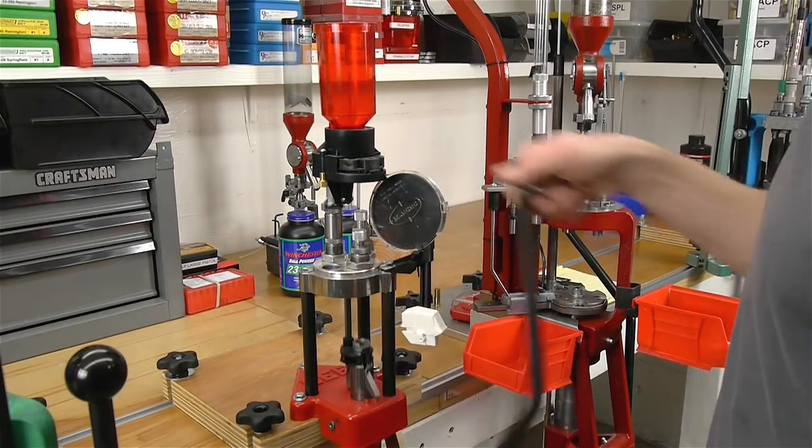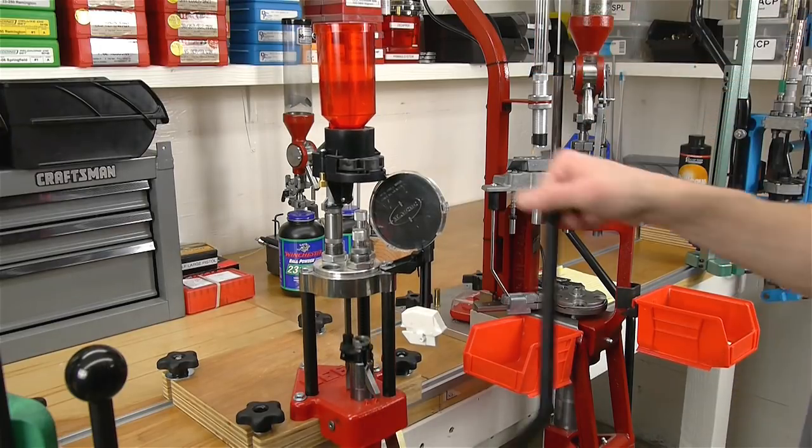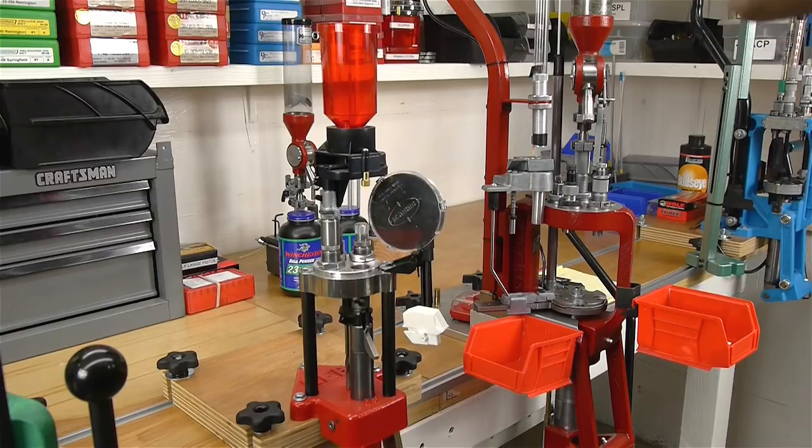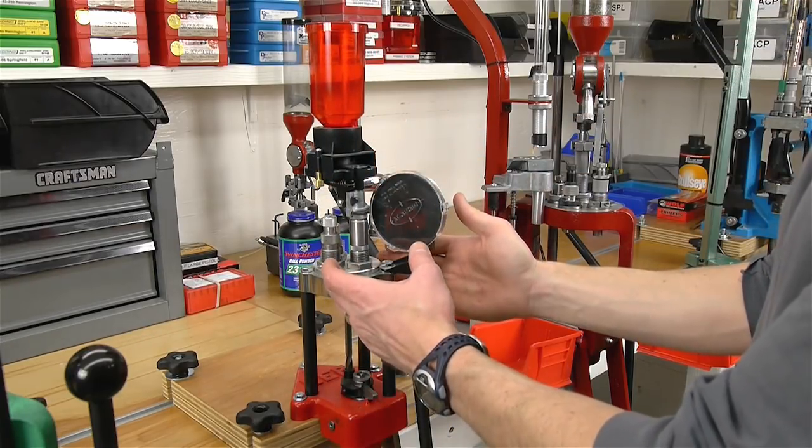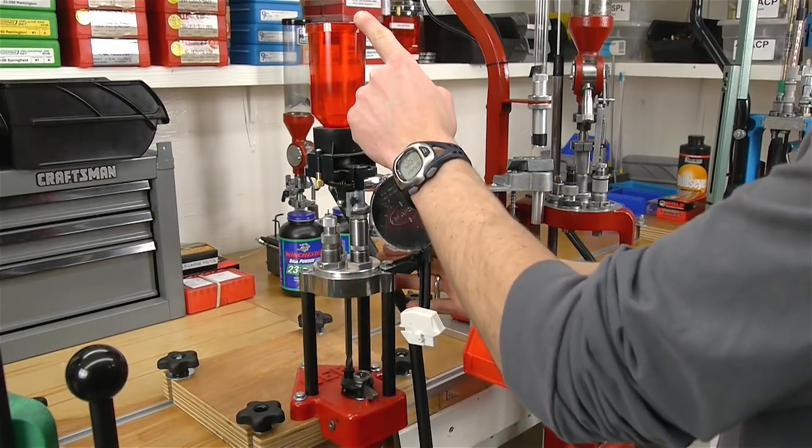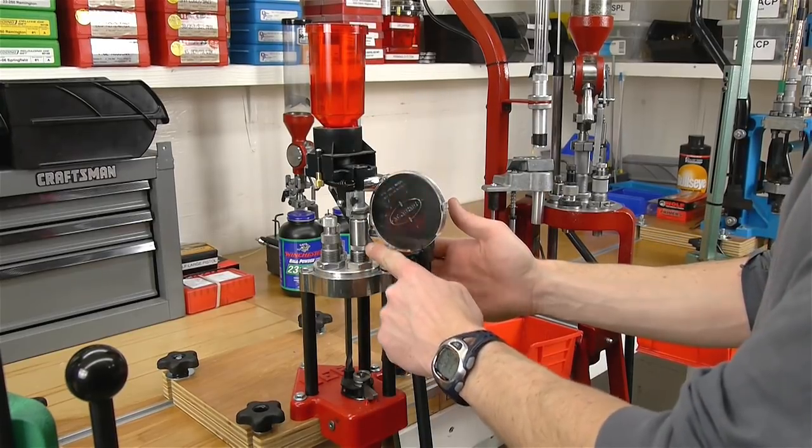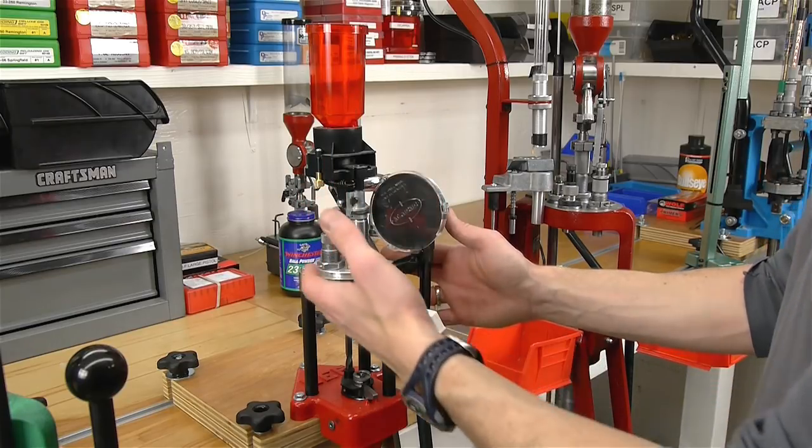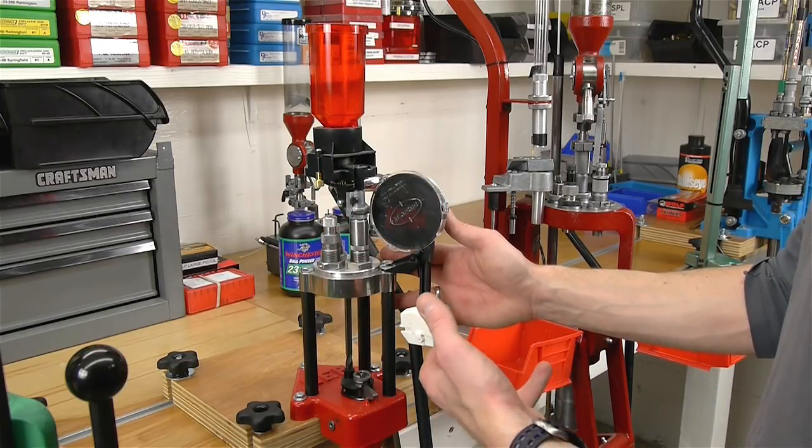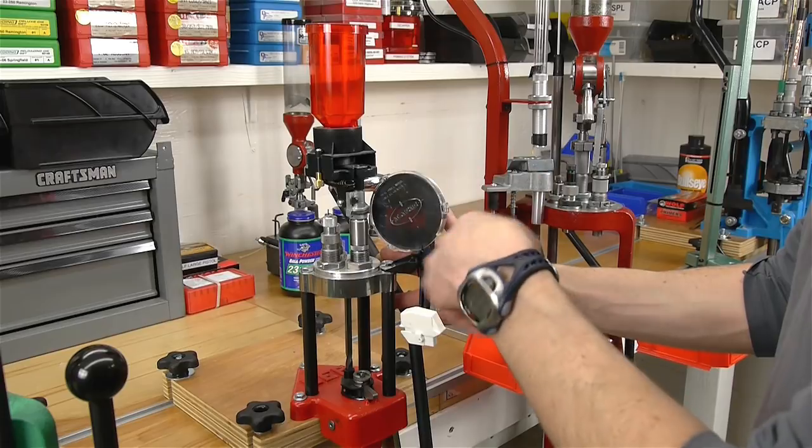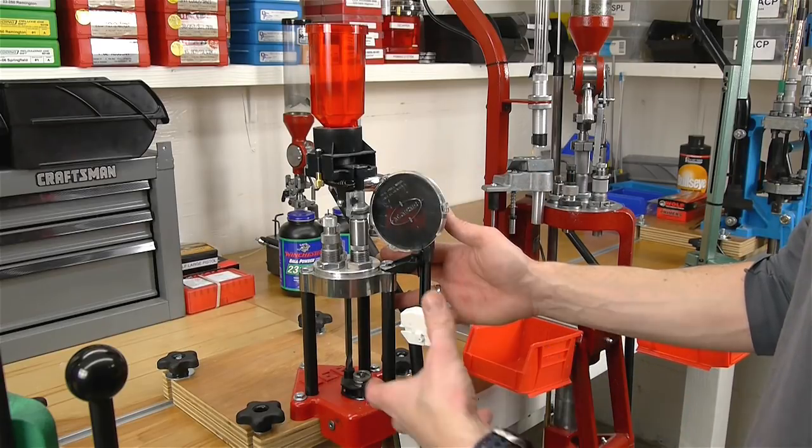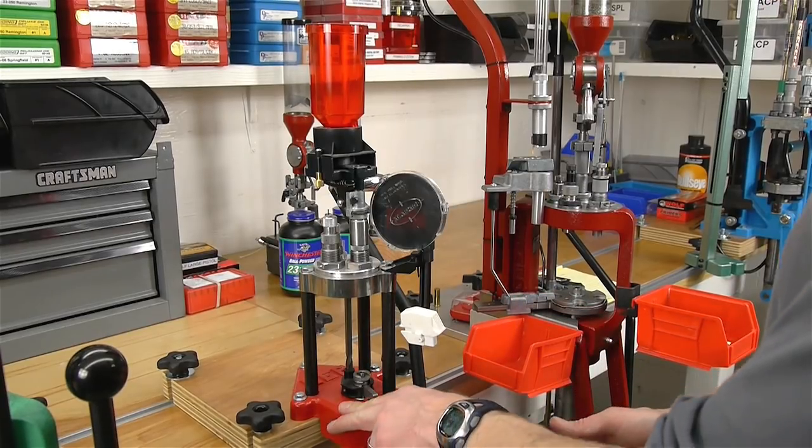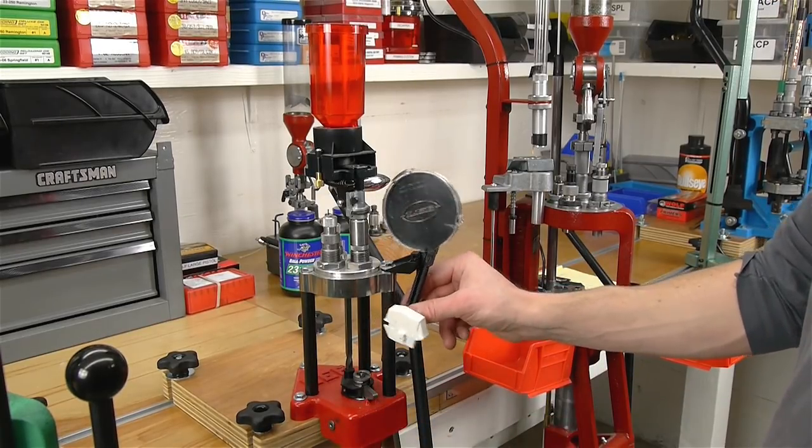If we've got a setup where we're loading rifle ammunition and we've got the powder measure here that we're using to dispense powder charges, we've got a sizing and depriming die, we've got a bullet seating die, those can all be indexed into position automatically on this particular press. This is the Lee Classic Turret which is a cast iron base press. It's got the Safety Prime system so that we can prime.